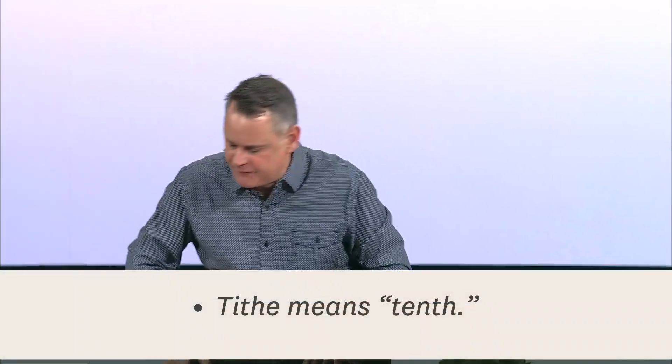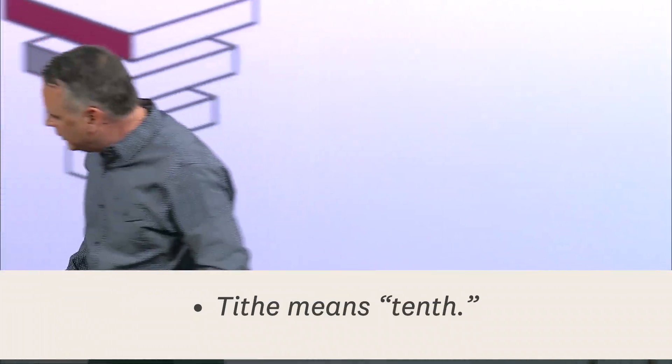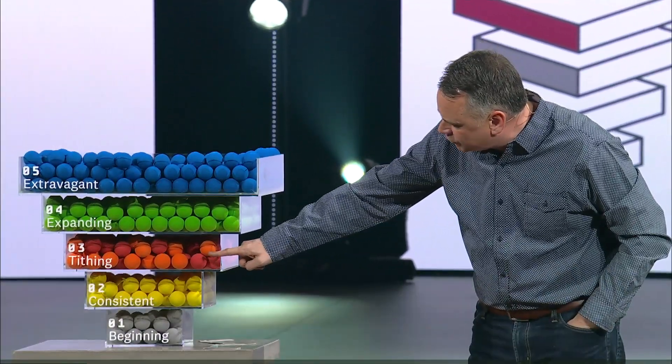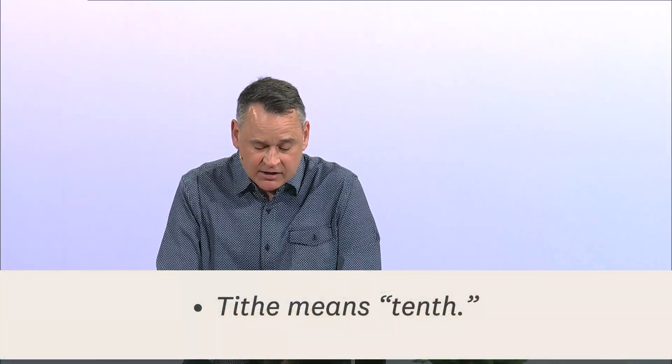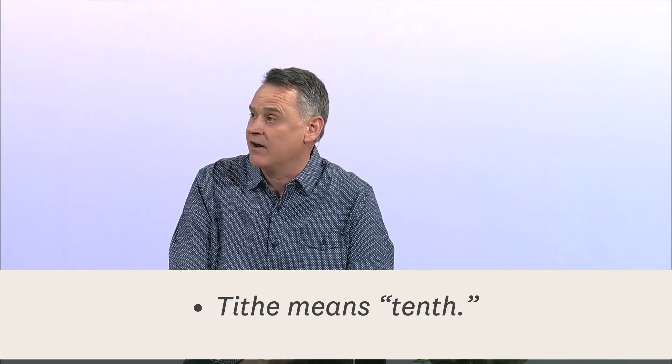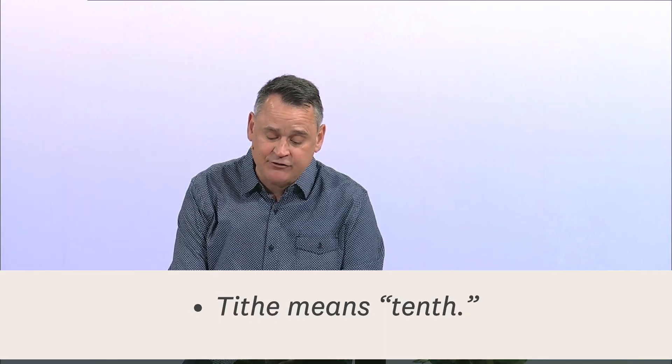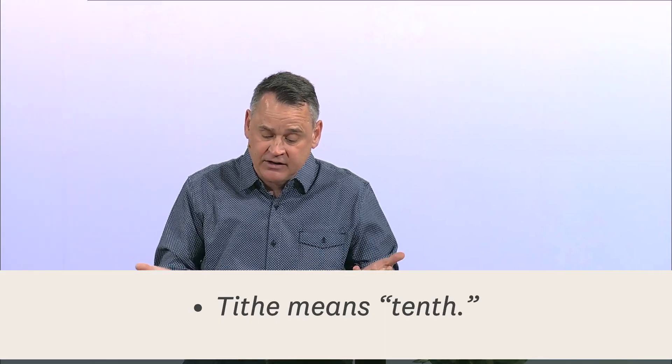Tithe means tenth. If you want to be generous and try this — the word tithing means tenth, so whatever God gives you, you give a tenth back. Let me make it practical: if you make $20,000, that means you'd give $2,000 in a calendar year — $38.50 per week. That's a tithe. If you make $300,000, you would tithe $30,000 back to God — $577 a week through your church called Christ's Place.